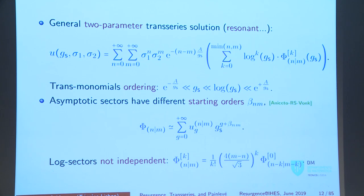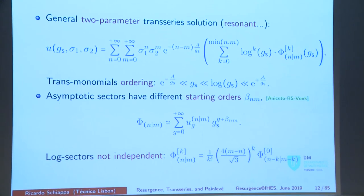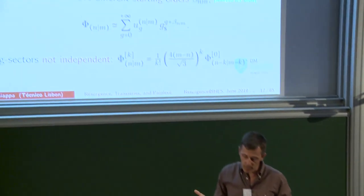There are some logarithms — it's a finite sum, so they're not terrible. And then there are some Φs — the capital Φs are asymptotic series. Putting them as expansions in g_s, which was z to the minus four-fifths, they have different starting orders — there's a β, which will be important shortly. The log sectors are not independent — this is an effect of resonance, the hallmark of resonance in these nonlinear problems. They all relate to each other. You can put these ansätze into the equation, get recursion relations, and compute a lot of these U_{g,n,m} coefficients.